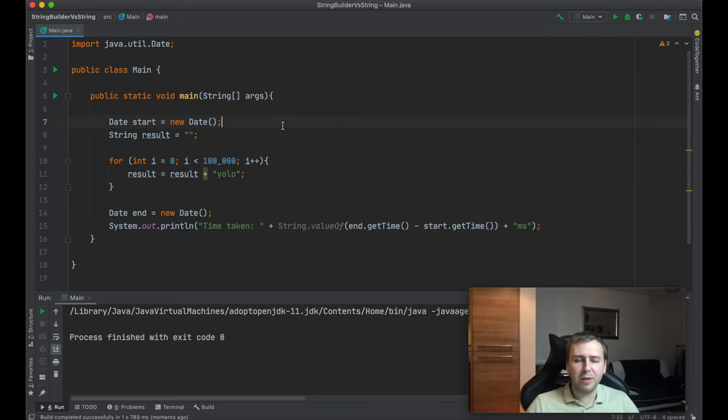Okie dokie guys so what do we have here? Basically let's just concatenate the string for 100,000 times using the simple Java plus operand. So we'll execute this for loop 100,000 times and we will just do like the string plus the word YOLO.